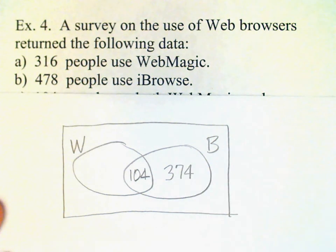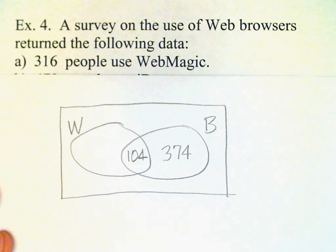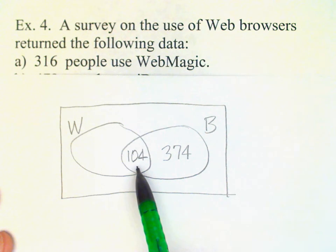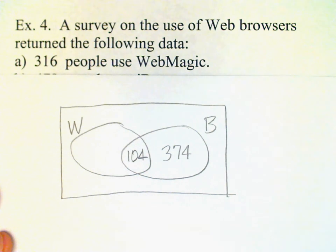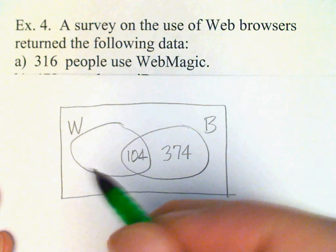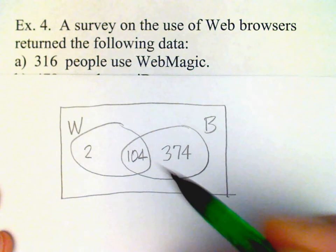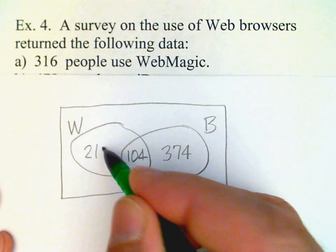In part A we're given that 316 people use WebMagic. We know that 104 of them are also in the overlap region. That means we have 316 minus 104, which gives us 212 in the WebMagic-only region.